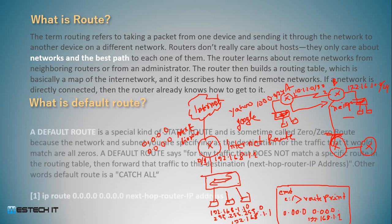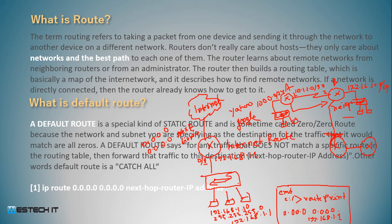The default route is a kind of static route and it is something called a zero route, because the network and subnet are specified as 0.0.0.0. A default route says: for any traffic that does not match a specific route in the routing table, when it does not match, then forward traffic to the next destination.